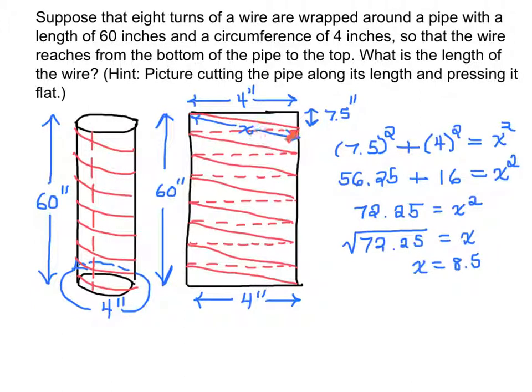So each one of these turns, which is one of these turns around the pipe, is 8.5. Well, we have 8 turns. So we want to know what is 8 times x, because there are 8 turns, which is 8 times 8.5. And that is equal to, multiply that by 8, 68. So the answer is 68 inches. Let's put a box around our answer.